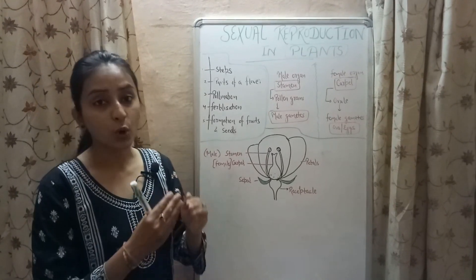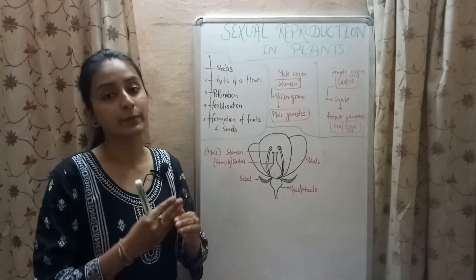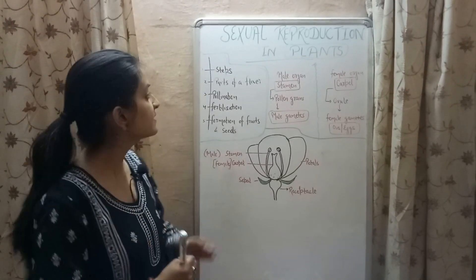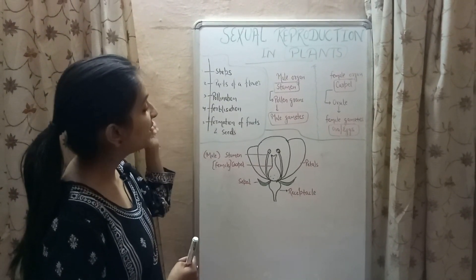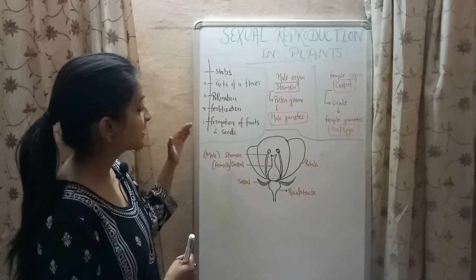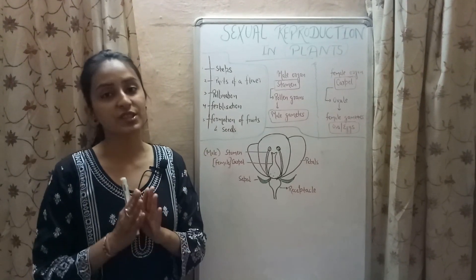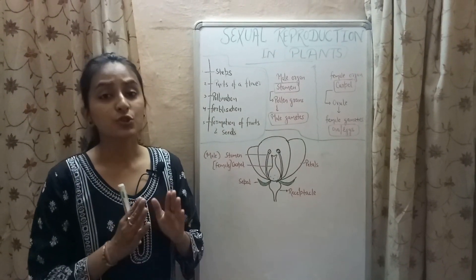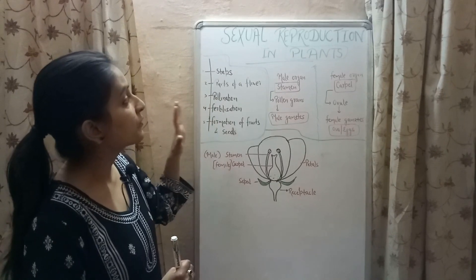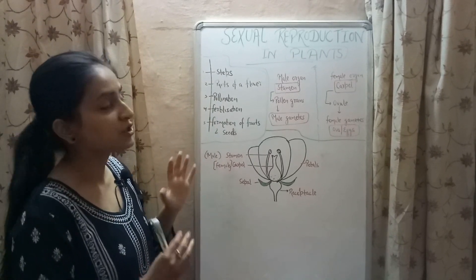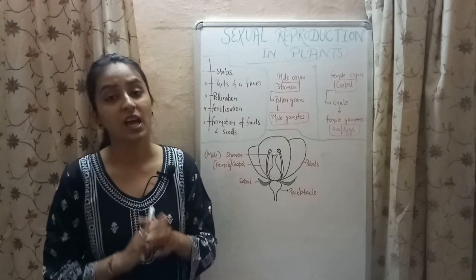In this video we'll be covering five major topics: the steps in the process of sexual reproduction in plants, parts of a flower, pollination, fertilization, and formation of fruits and seeds. So let's start with the process of sexual reproduction in plants.